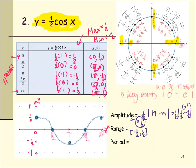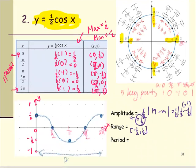The graph repeats the same pattern after completing one cycle at two pi. The period is the distance from one end to the other, which is two pi minus zero, so the period equals two pi.